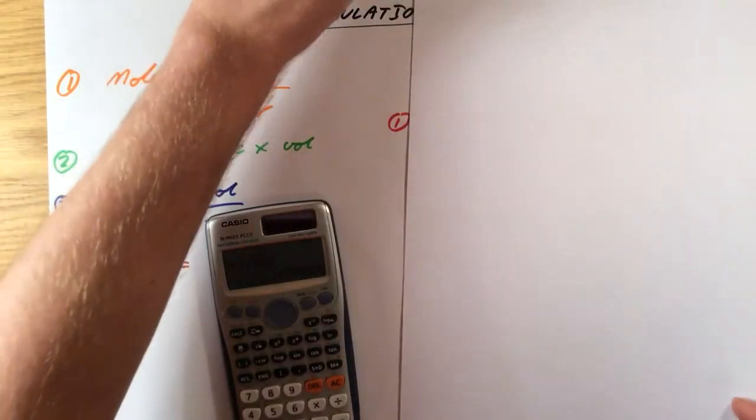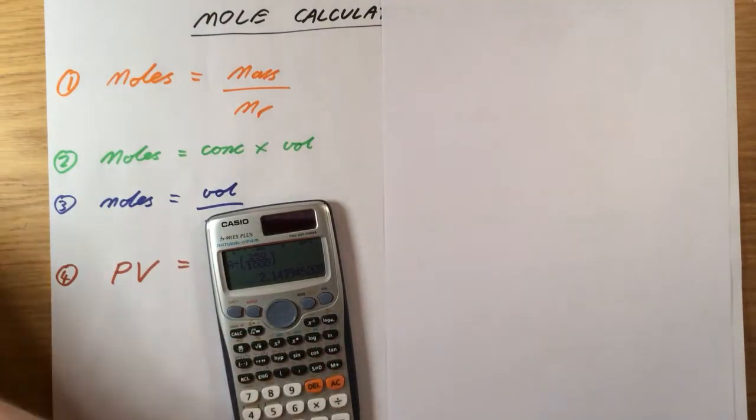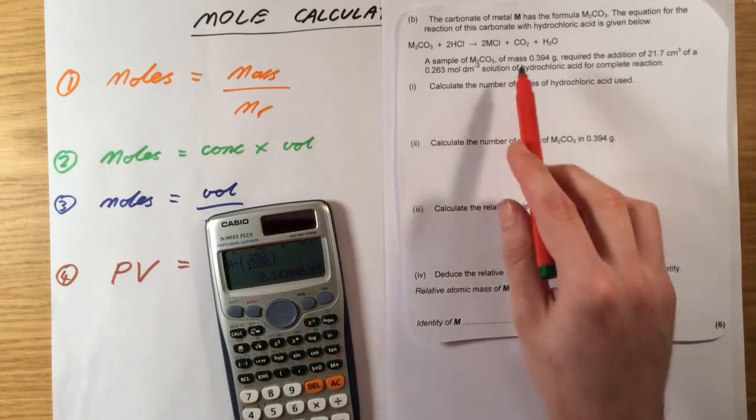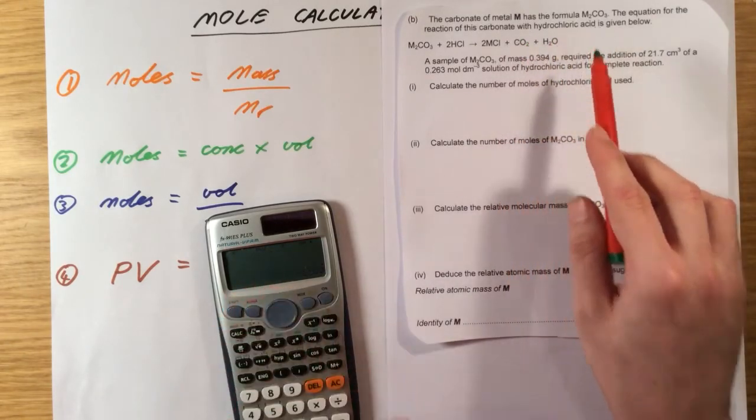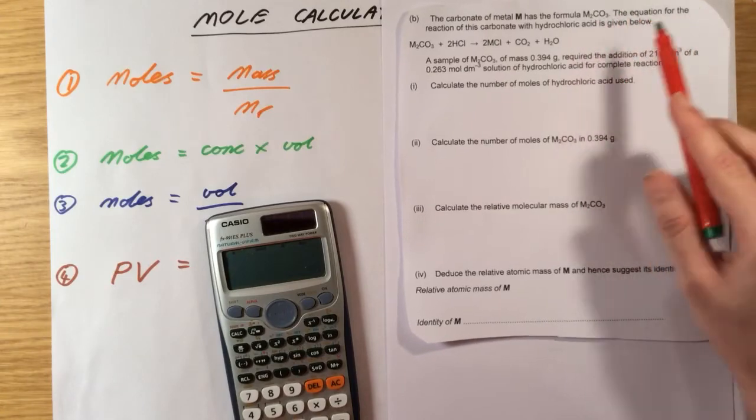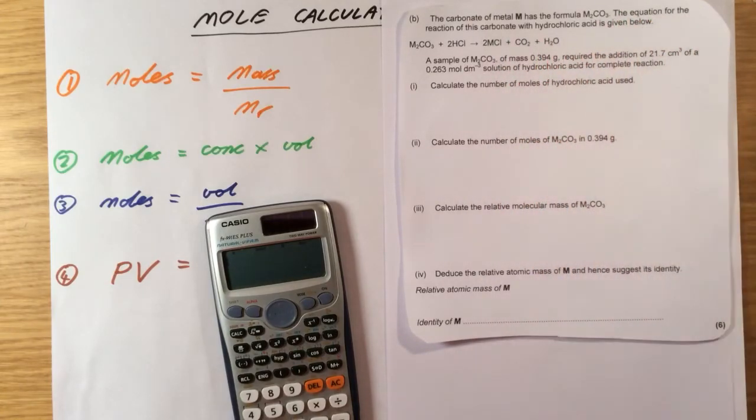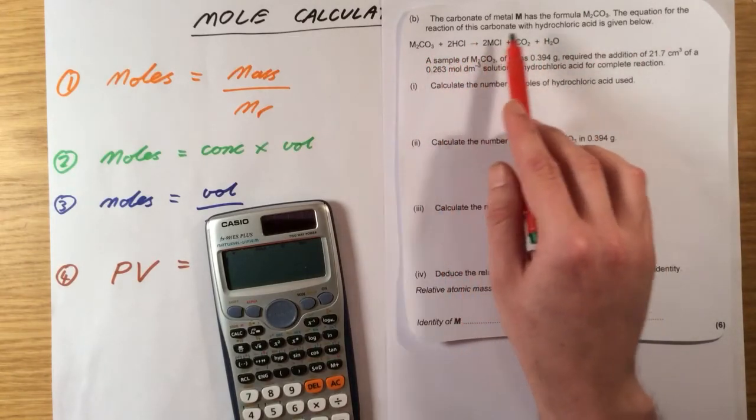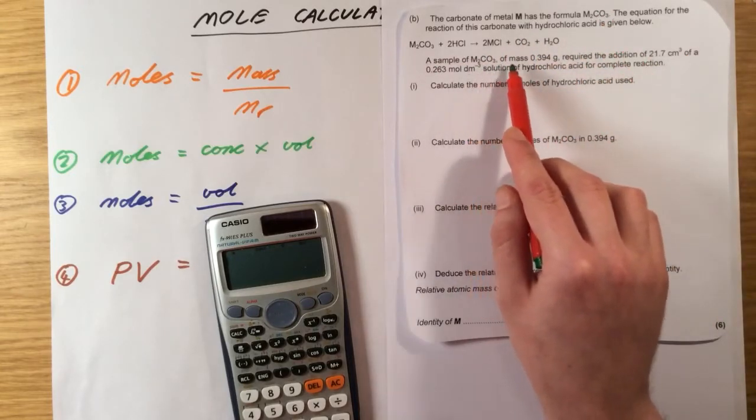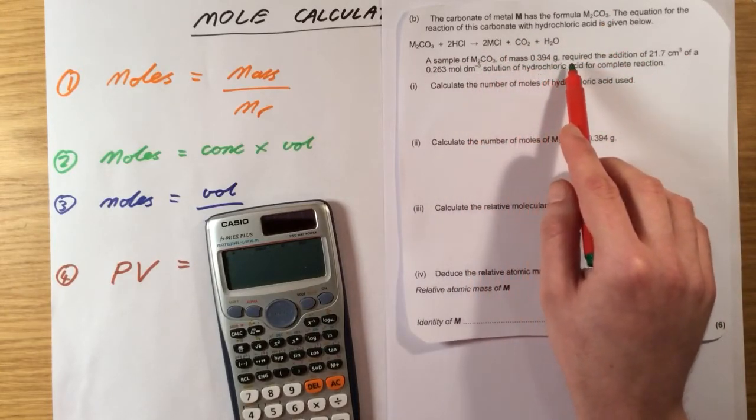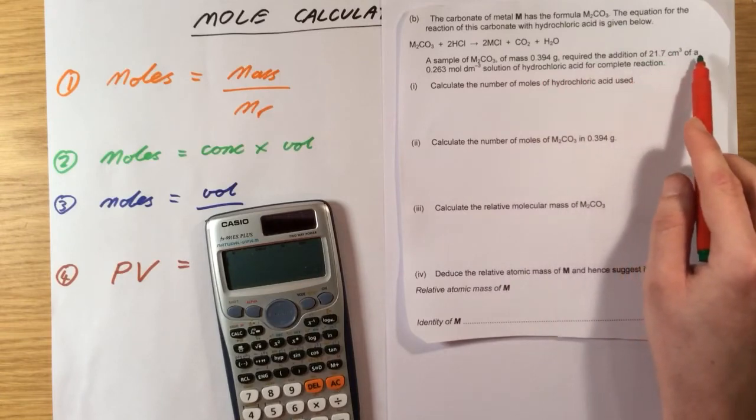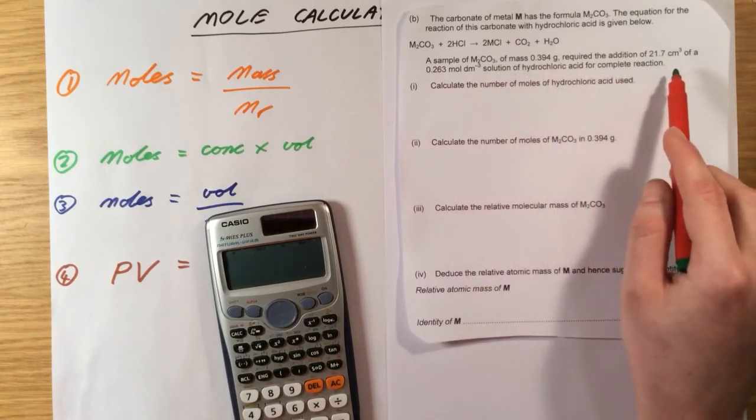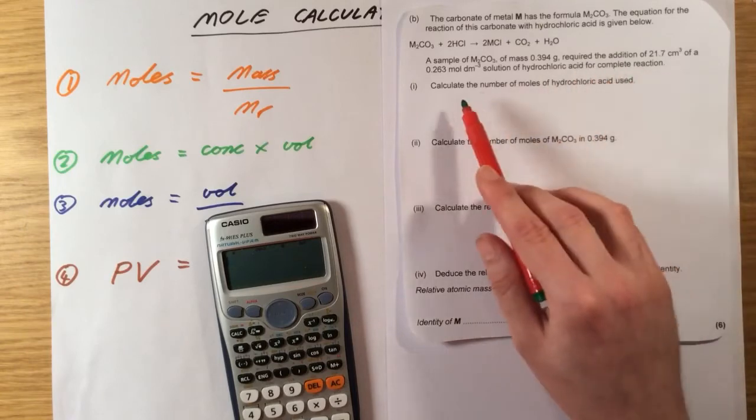Question number two. It was actually the second part of the same question. It tells us the carbonate of metal M has a formula M2CO3, where M is unknown. The equation for the reaction of this carbonate with hydrochloric acid is given below. So this time I'm assuming I'm going to have to use this equation to actually work out ratios of moles. A sample of M2CO3 has a mass of 0.394 grams, and it needed 21.7 centimeter cubed of a 0.263 mole per decimeter cubed solution of hydrochloric acid for complete reaction. A lot of information here. Let's break it up when we look at the questions.